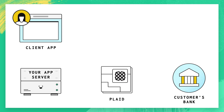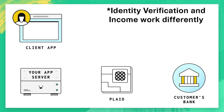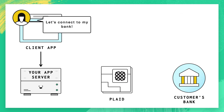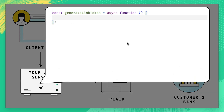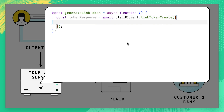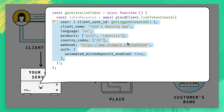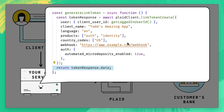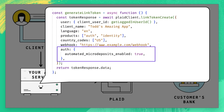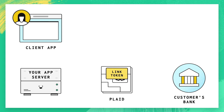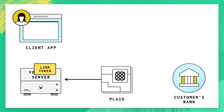The general process for connecting to most Plaid products looks like this. When your user is ready to connect your app to their bank, your server will talk to Plaid to generate a Link token. You'll do this by sending a call to the Link token create endpoint and passing in some information about how you'd like to configure Link — such as what products you want to require, what language to use, and often some product-specific information. What you'll get back is a Link token; send that token up to your client.